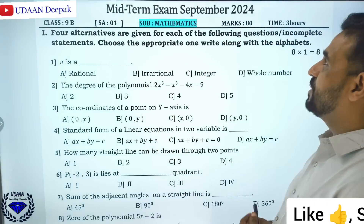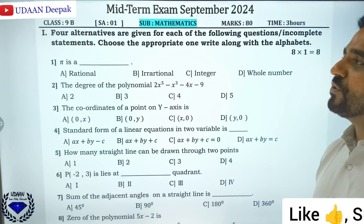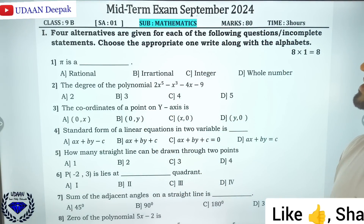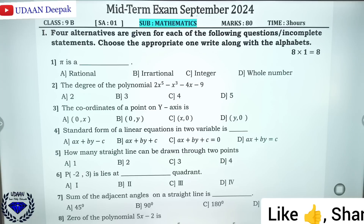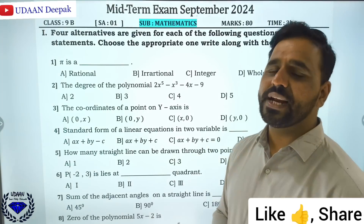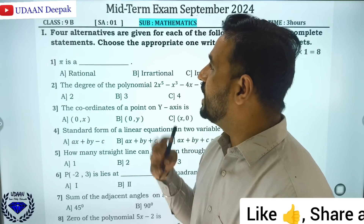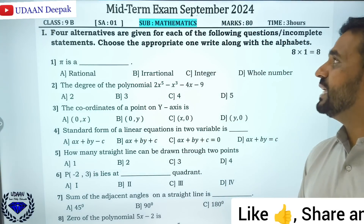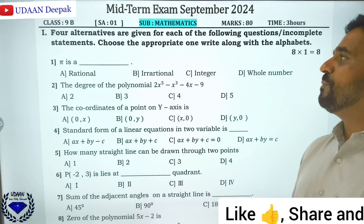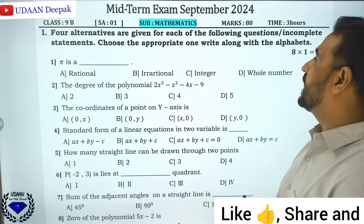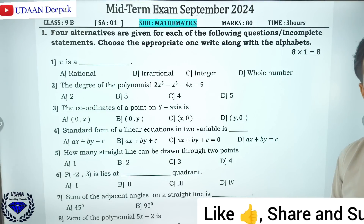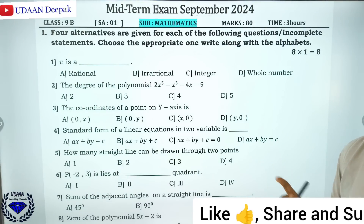See, midterm exam September 2024, class 9. Subject: mathematics. Total 3 hours 15 minutes — 15 minutes for reading and 3 hours for writing. Then 4 alternatives are given for each of the following questions or incomplete statements. Choose the appropriate one along with the alphabet. So you will get 8 questions, 1 mark each.